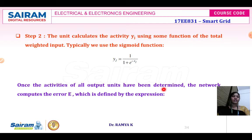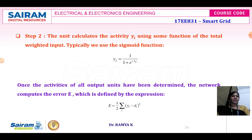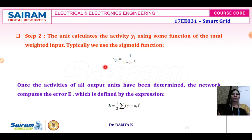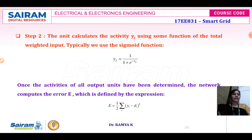The network has three layers — input layer, hidden layer, and output layer. In the hidden layer the weight is processed. Once the activity of all units has been determined, the network computes the error defined by the expression: e = (1/2) Σi (yi − di)². Functions used can be triangular, square, sigmoidal, or sinusoidal depending on the application. For the sigmoidal function, the weighted output is YJ = 1 / (1 + e^(−XJ)).